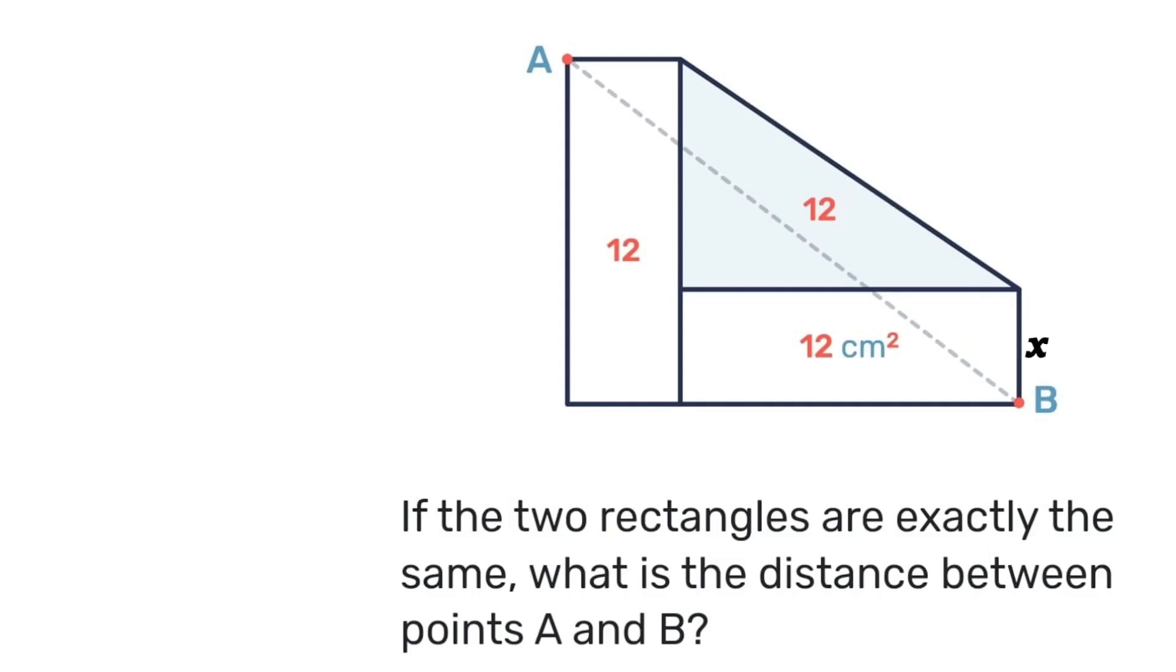Let's call the width of the rectangle x and so the length of the rectangle we'll call that y. Now if that is x on the right then because it's a rectangle that will also be x on the left. That means that the height of the triangle will be y minus x.